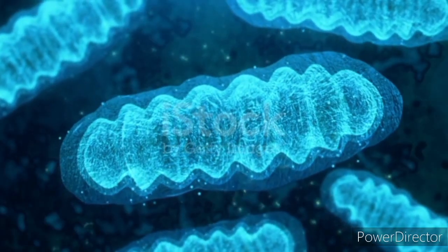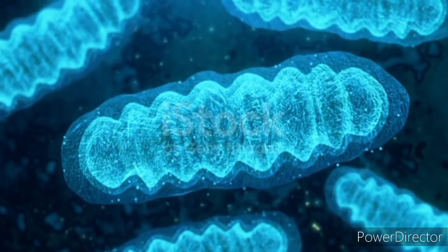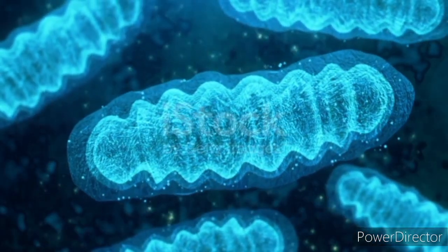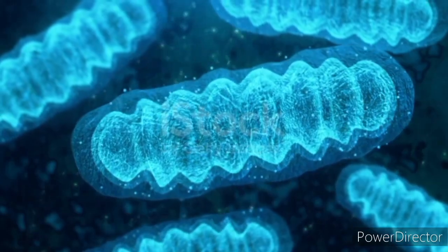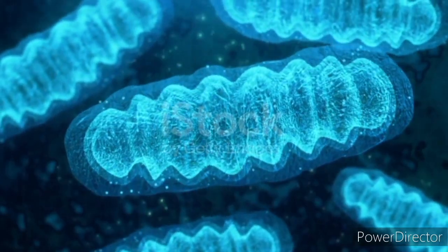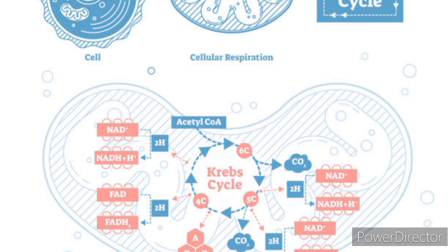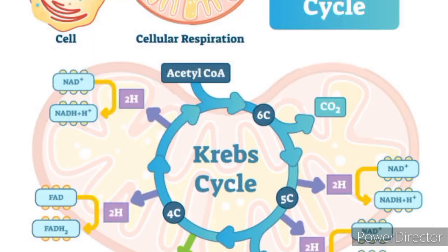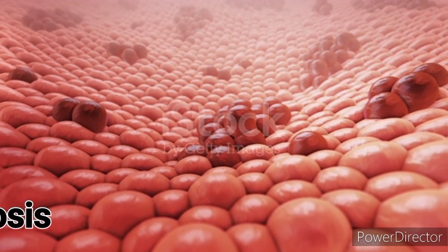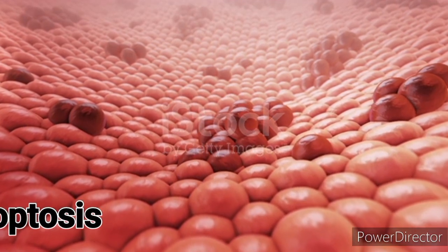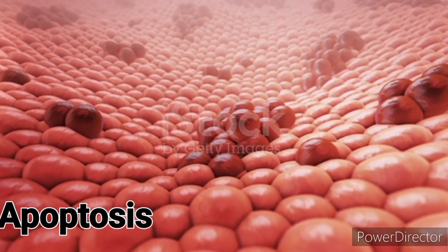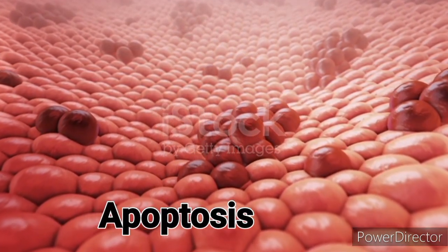Cellular metabolism. Apart from energy production, mitochondria are involved in various metabolic pathways, including the citric acid cycle, or Krebs cycle, that further breaks down nutrients to produce energy.